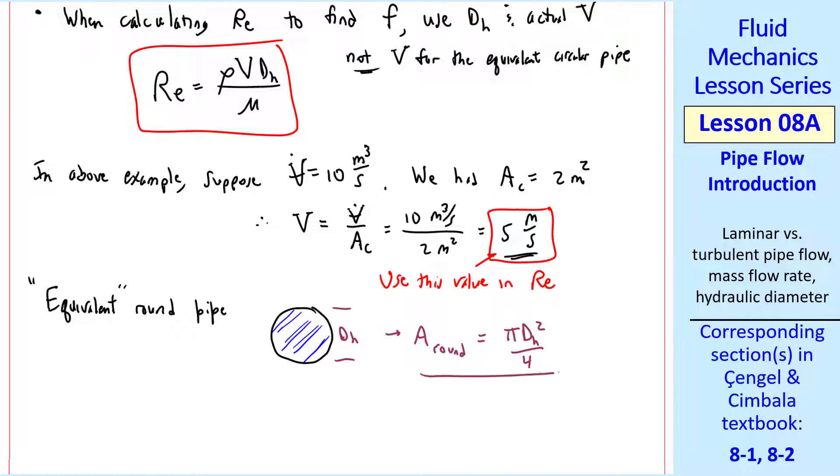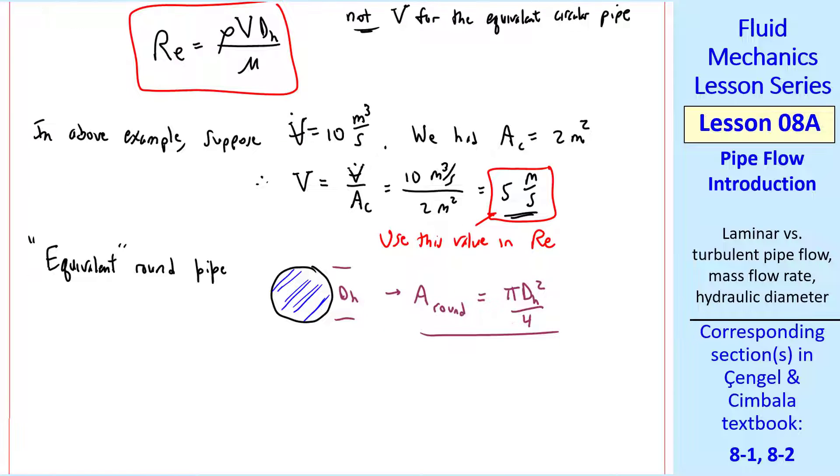So the cross-sectional area, A round, is pi DH squared over 4. If we would use that to calculate the average speed, we would get V dot over pi DH squared over 4, which turns out to be 3.183 meters per second. You might be tempted to use that V to calculate your Reynolds number, since we're kind of pretending that we have this round pipe, but we have to be careful to use this speed, not this speed.